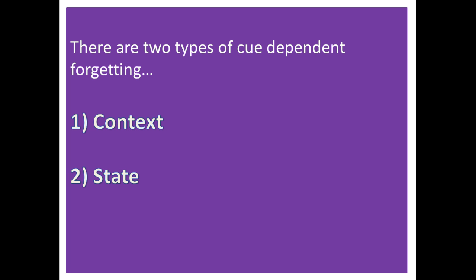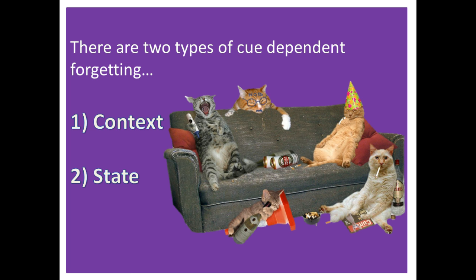There are two types of cues. Context cues refer to the setting or situation where information is recorded — for example, a particular room, a certain group of people, or the weather. State refers to your internal state, which can be physical or psychological. For instance, Goodwin et al. in 1966 found that when people hid money while drunk, they were more able to find it again when drunk. When sober, they couldn't find the cash.